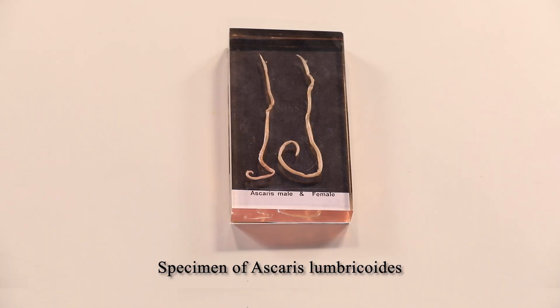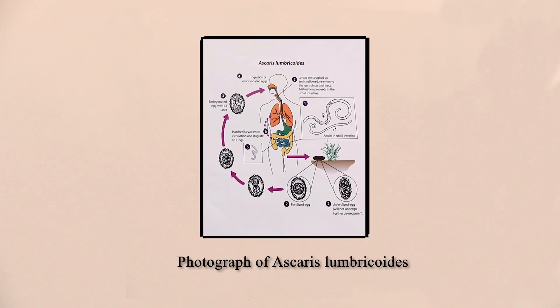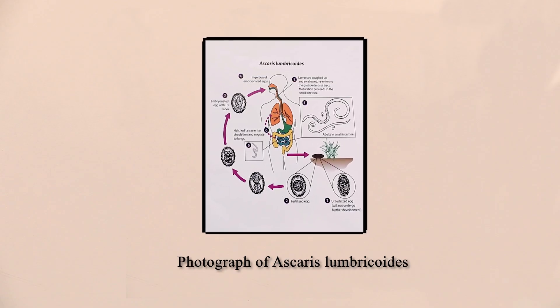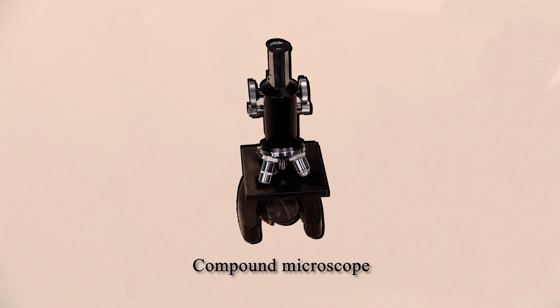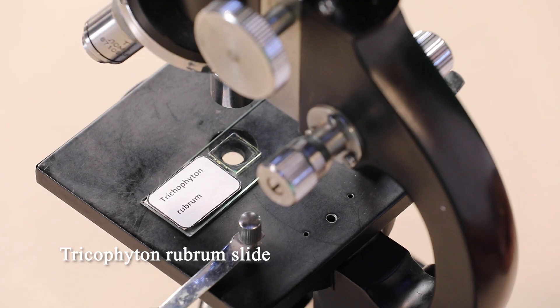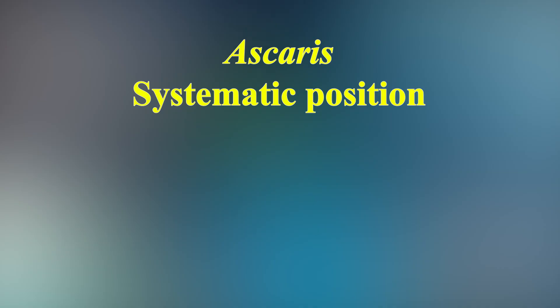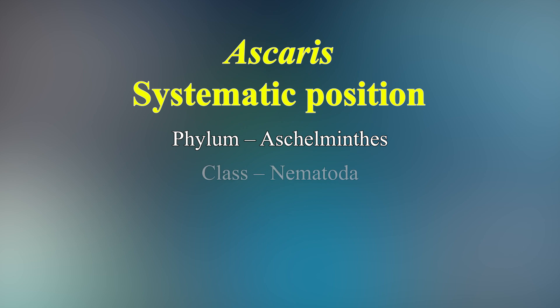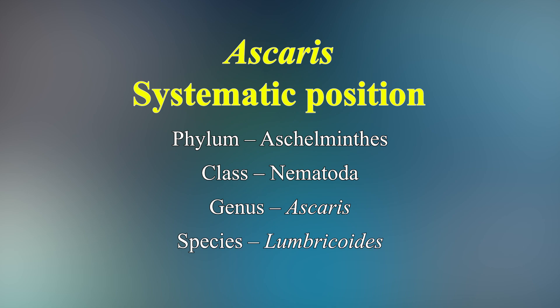The materials required for this session are a specimen and photograph of Ascaris lumbricoides, a compound microscope, and a permanent slide of Trichophyton rubrum. Let us study the distinctive features of Ascaris lumbricoides through its specimen and photograph. The systemic position of the organism is: phylum Aschelminthes, class Nematoda, genus Ascaris, species lumbricoides.